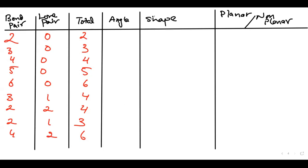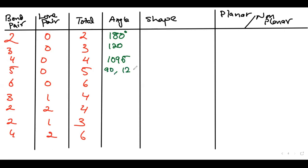Now let's talk about the angles. When you have 2 bond pairs and 0 lone pairs, the bond angle is 180°. When you have 3 bond pairs and 0 lone pairs, the angle is 120°. When you have 4 bond pairs and 0 lone pairs, the angle is 109.5°. When you have 5 bond pairs and 0 lone pairs, you have two sets of angles: 90° and 120°.